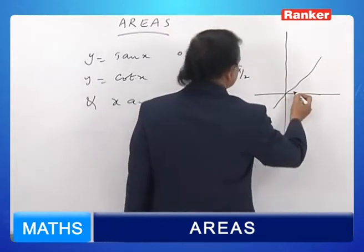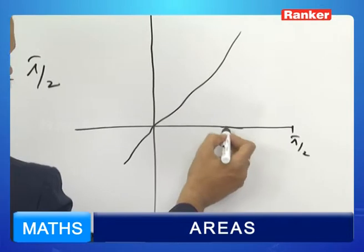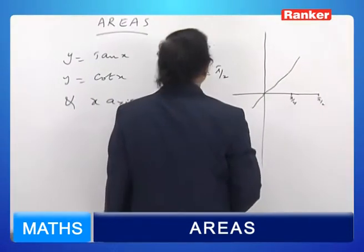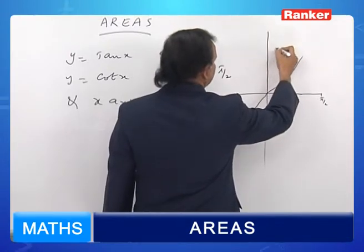And for cot x, let this be pi by 2. This is pi by 4. Somewhere else here it will be pi by 3.